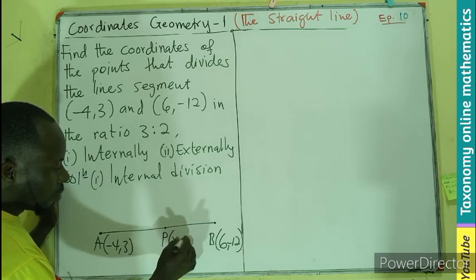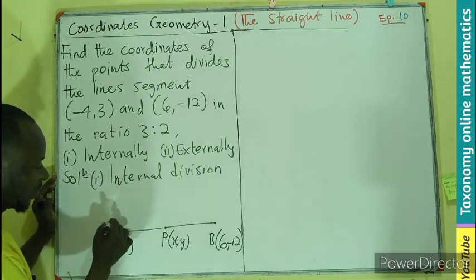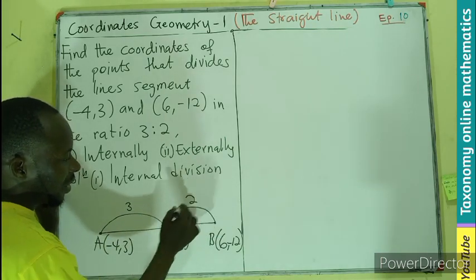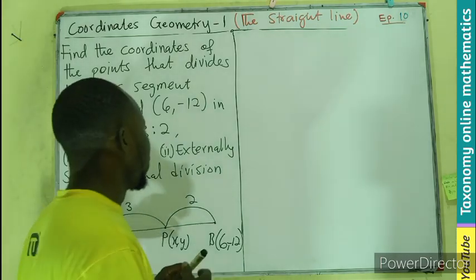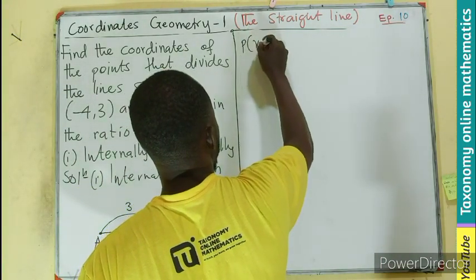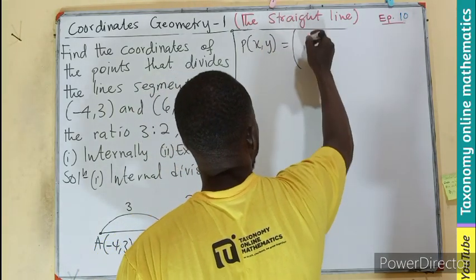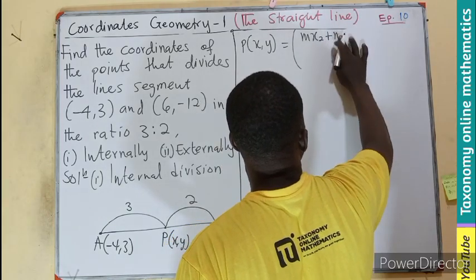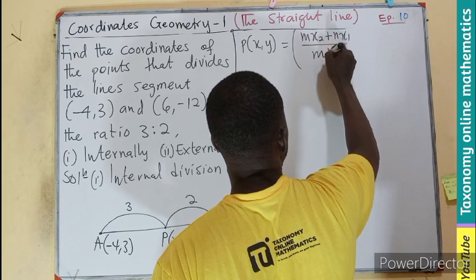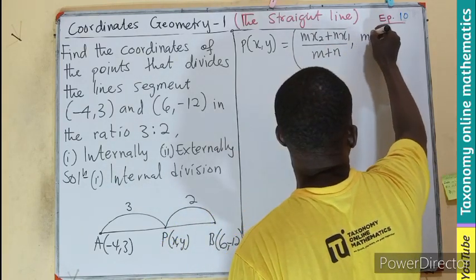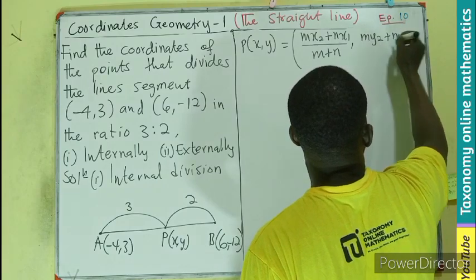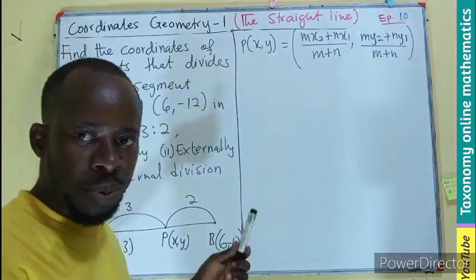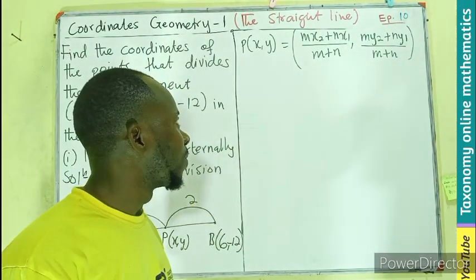The point P is here. So I'll be having this as 3 divisions, this as the second division. Don't forget, if I'm looking for the coordinate of X at P, it's going to be just M X2, N X1, divided by M plus N. We have similar points for Y as well. This is a recall from the previous episode, how we derive the formula.